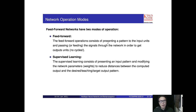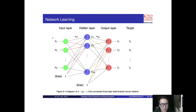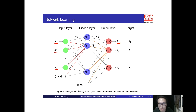When we talk about the feedforward neural network, we have two modes of operation. I have already explained the feedforward mode. When we present X1, X2, Xd into the network, this information propagates layer to layer, and finally we obtain Z1, Z2, and Zc. That is the feedforward mode.